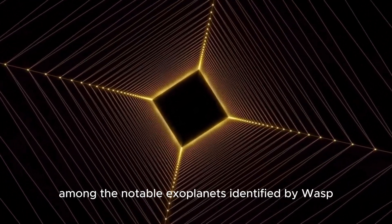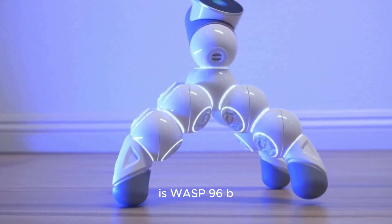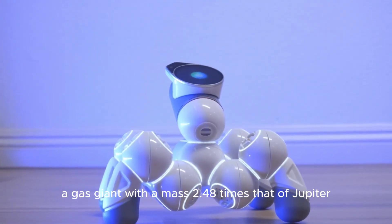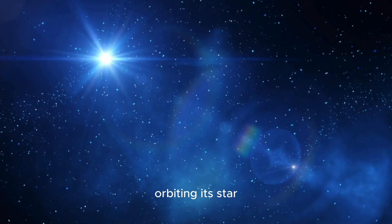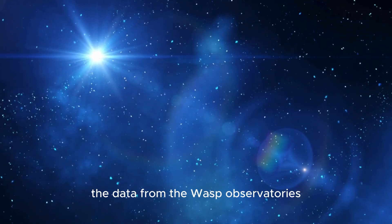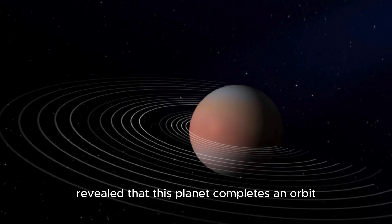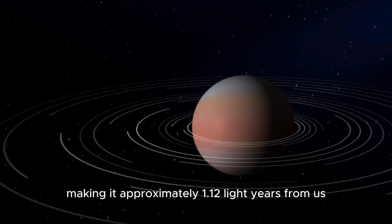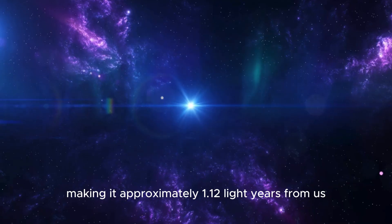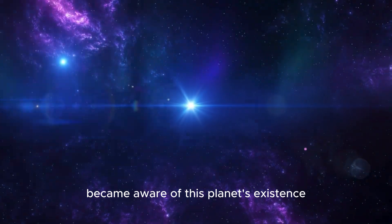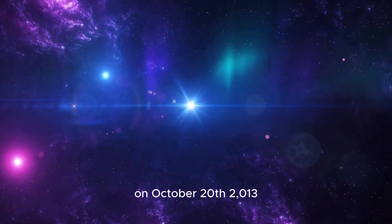Among the notable exoplanets identified by WASP is WASP-96b, a gas giant with a mass 2.48 times that of Jupiter, orbiting its star at a distance of 4.53 astronomical units. The data from the WASP observatories revealed that this planet completes an orbit around its star every 3.4 days, making it approximately 1.12 light-years from us. The scientific community became aware of this planet's existence on October 20, 2013.